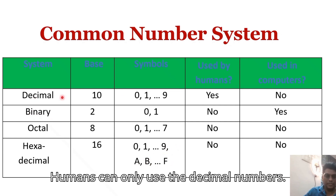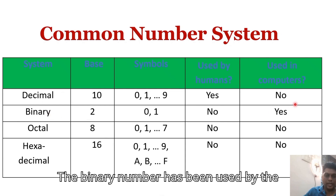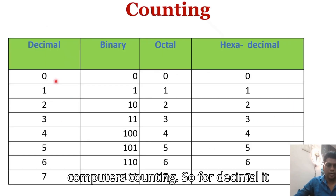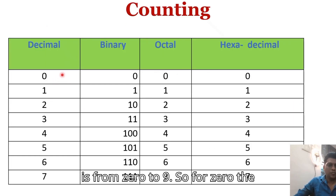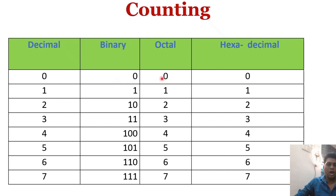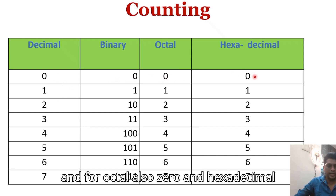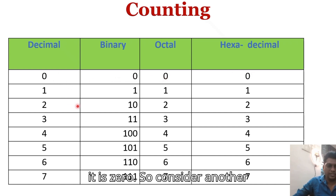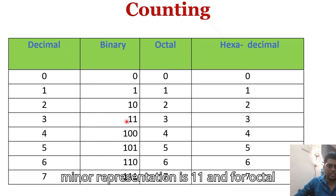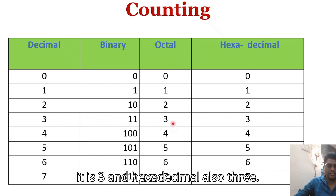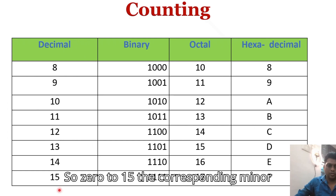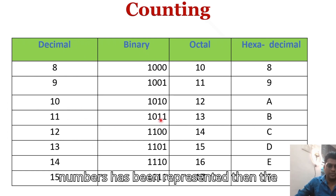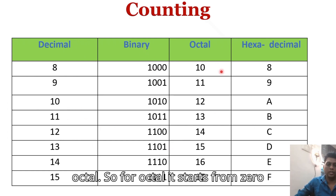Humans can only use decimal numbers, while binary numbers are used by computers for counting. For decimal 0, the corresponding binary representation is 0, and for octal and hexadecimal it is also 0. For decimal 3, the binary representation is 11, octal is 3, and hexadecimal is also 3.